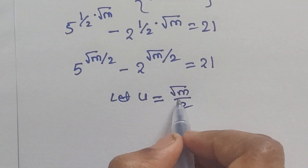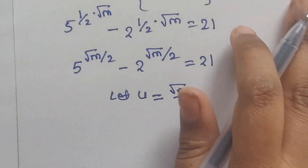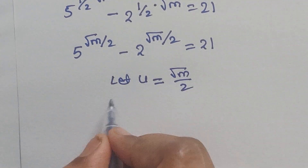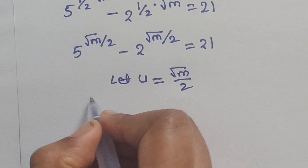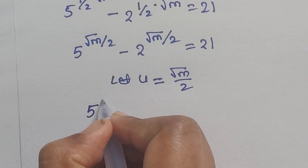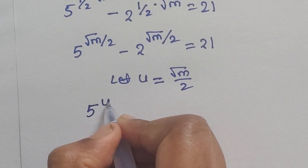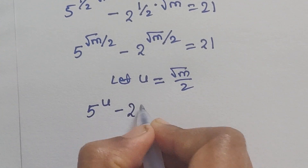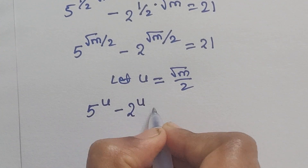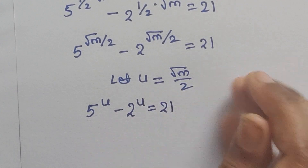So in place of square root of m over 2, we will write u. Now it becomes 5 to the power of u, minus 2 to the power of u, equals 21.